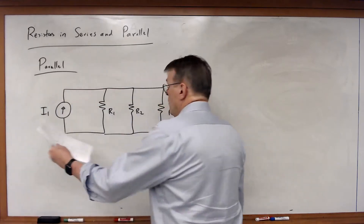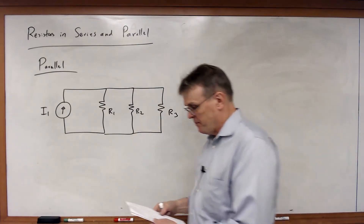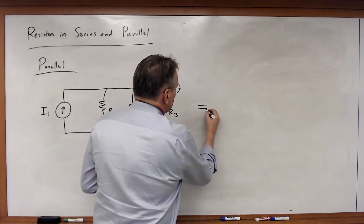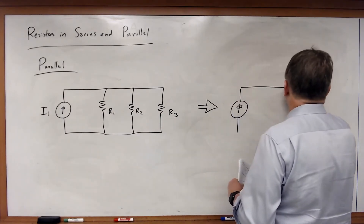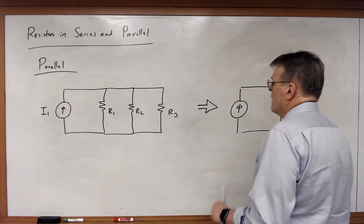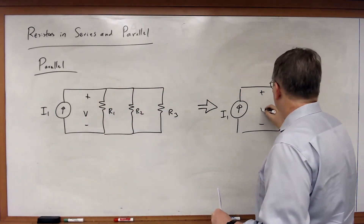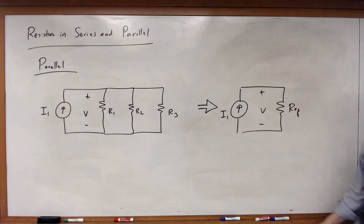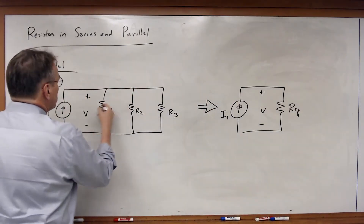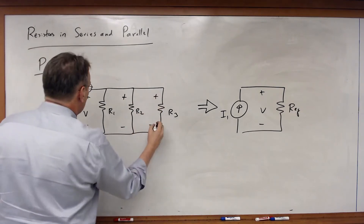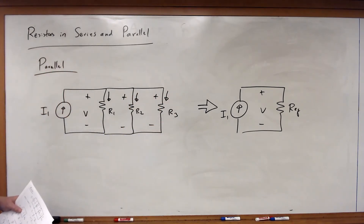For the parallel case, we have a single node-pair circuit where all elements are connected between the same two nodes — top and bottom. The claim is that a transformation exists such that we can combine the three resistors into an equivalent resistor where the voltage V across it is the same as the voltage across the original three resistors.